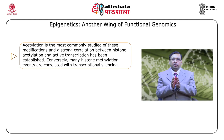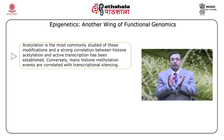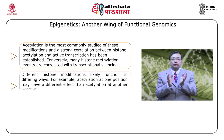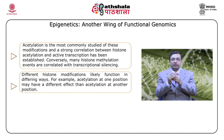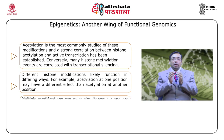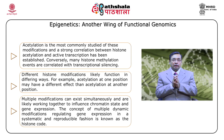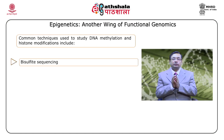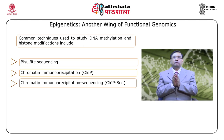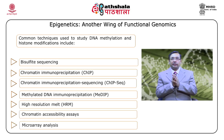Acetylation is the most commonly studied of these modifications, and there is a strong correlation between histone acetylation and active transcription. Conversely, many histone methylation events are correlated with transcriptional silencing — because if there are more CpG islands and more methylation, gene transcription can be silenced. Multiple modifications can exist simultaneously and likely work together to influence chromatin structure and gene expression. Common methodologies to study epigenomics include bisulfite sequencing, chromatin immunoprecipitation assay, MeDIP-chip, HRM, mobility shift assay, and many more.